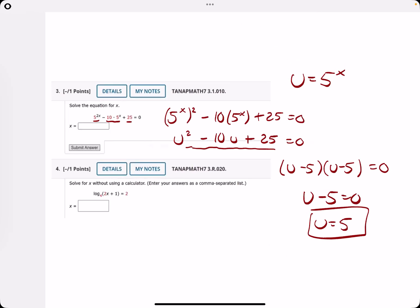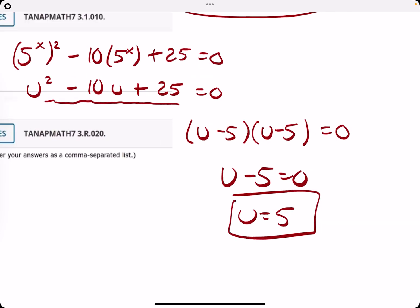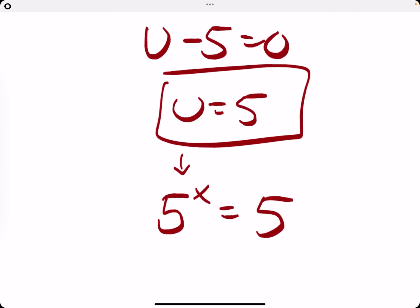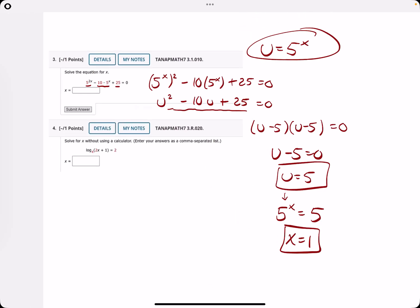So we solved for u, but keep in mind, we want to solve for x. We know that u is equal to 5 to the x. So we replace u with 5 to the x. And we set, instead of u equal to 5, we set 5 to the x equal to 5. And we think about this equation to solve for x. 5 to what power equals 5? That would be 1. So x equals 1.